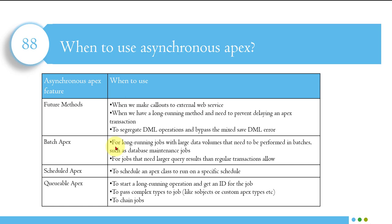For batch apex: use it for long-running jobs with large data volumes that need to be performed in batches, such as database maintenance jobs. You can also use it for jobs that need a larger query result than a regular transaction allows. Normally a SELECT query can return up to 50,000 records, but if you need to fetch 100,000 or 500,000 records in a query, you can use batch apex.